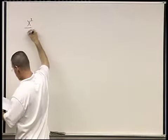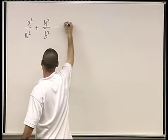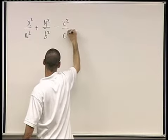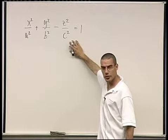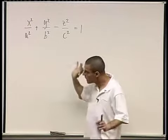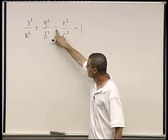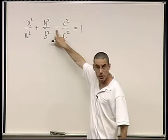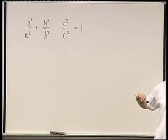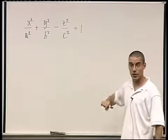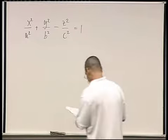How about x²/a² + y²/b² − z²/c² = 1? As far as the equation looks, it's very similar to the ellipsoid — the only difference is that the plus now becomes a minus. But don't be deceived: it's a totally different shape. Any change you make can turn out to be very significant.